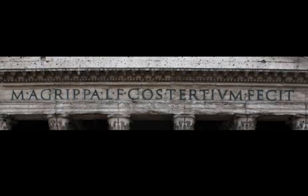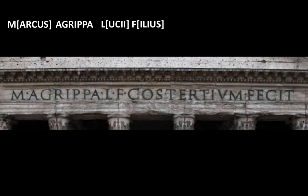This is a zoomed-in image of the inscription, and you can recognize words and single letters separated by dots. On the left-hand side, we see the letter M. This letter stands for the name Marcus. Then we see the name Agrippa. Then the letters L and F, which stand for Lucii filius, which means son of Lucius.